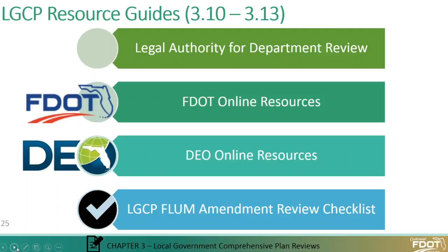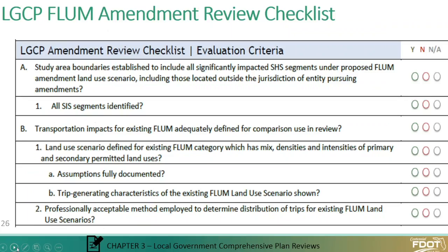Finally, we have a checklist to go over what's called future land use map amendments. What you see before you is an example of the checklist for the future land use map amendments resource guide — I'm just showing you this as an example of what types of things you'll find at the back end of this chapter. The checklist first talks about whether the study correctly identifies the study area and what type of impacts this amendment might have. We will assess further in the presentation regarding future land use map amendments, what they are, and what elements they impact.